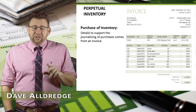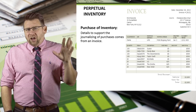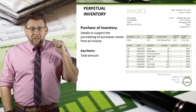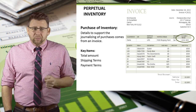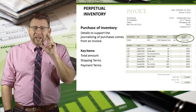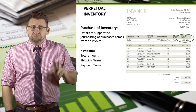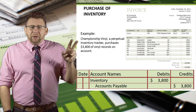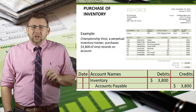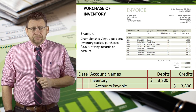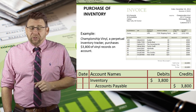When recording the journal entries for the purchase of inventory, an invoice has all of the pertinent information including the total amount purchased, the shipping terms, and the payment terms. So let's learn how to record inventory transactions for a perpetual buyer using the invoice. Championship Vinyl, a perpetual inventory tracker, purchases $3,800 of vinyl records on account. We would debit inventory and credit accounts payable for $3,800.